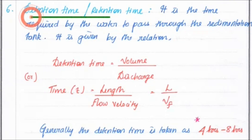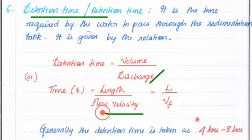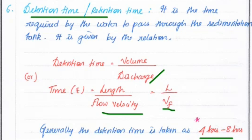The next important factor is detention time or retention period — the time required for water to pass through the sedimentation tank, or how long the water spends in the tank. It is given by: detention time = Volume / Discharge, and also time = Length / Flow velocity (VF). Generally, detention time is taken as 4 to 8 hours, based on how much treatment is required. The value of SOR is generally 12 to 18 cubic metres per day per square metre.